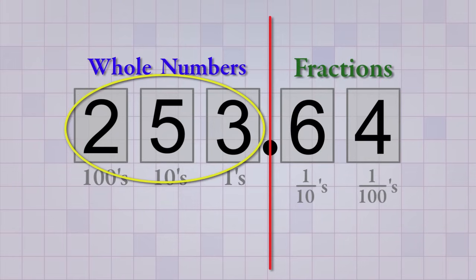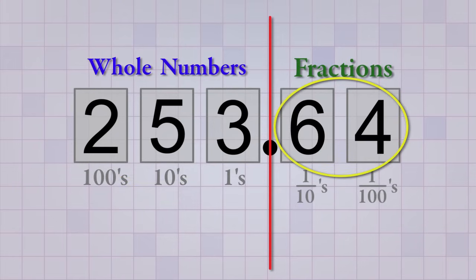Now our number reads 253.64. That's how you read the decimal point when you get to it — you just say 'point.' So the decimal point is really just a separator between the number places that count whole numbers on one side, from the number places that count fractions on the other side. We call numbers that use a decimal point decimal numbers, or decimals for short. And they're important because we use them to convert a fraction from a division problem into a regular number.